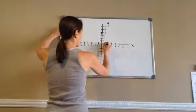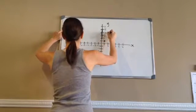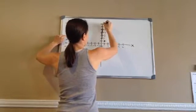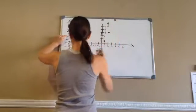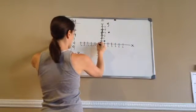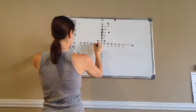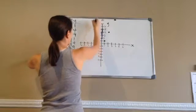Okay. So, let's draw this: 1, 1, 2, 4, 3, 9. And then negative 1, 1. Negative 2, 4. Negative 3, 9.